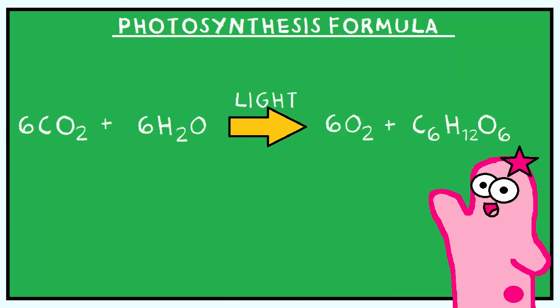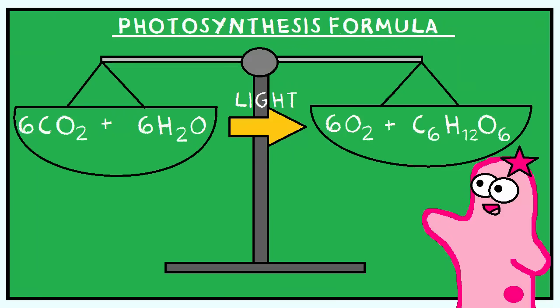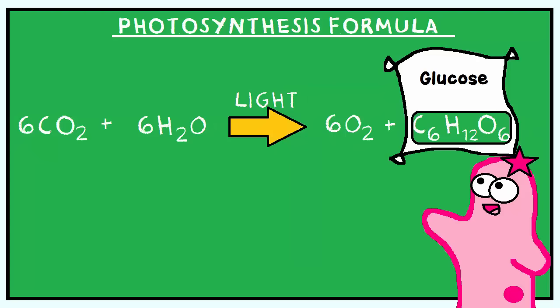Sometimes the formula is written a little differently. Technically, it needs to be balanced. Sometimes light is written on top of the arrow just to show that it is in the presence of light. It may instead look like this. The C6H12O6 is a sugar, specifically glucose.